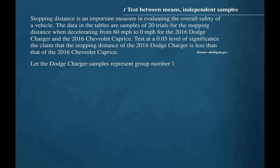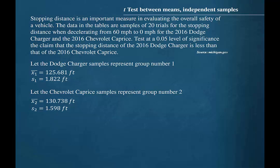Let's begin by letting the Dodge Charger samples represent group number 1. The measures for group 1 are sample mean equal to 125.681 feet and sample standard deviation equal to 1.822 feet. Let the Chevrolet Caprice samples represent group number 2. The measures for group 2 are sample mean equal to 130.738 feet and sample standard deviation equal to 1.598 feet.